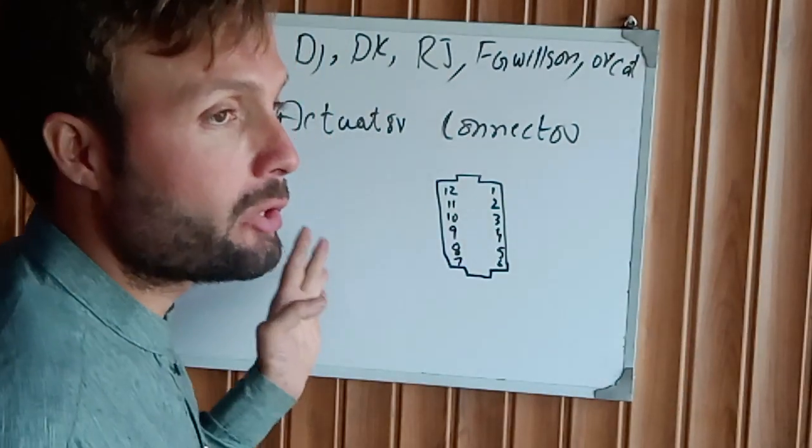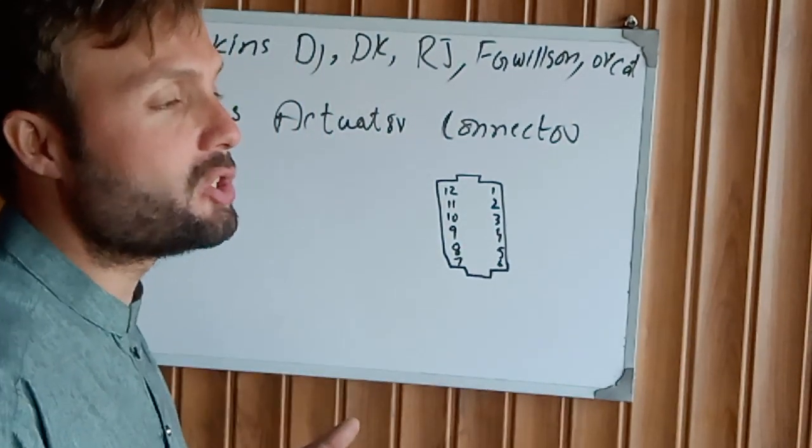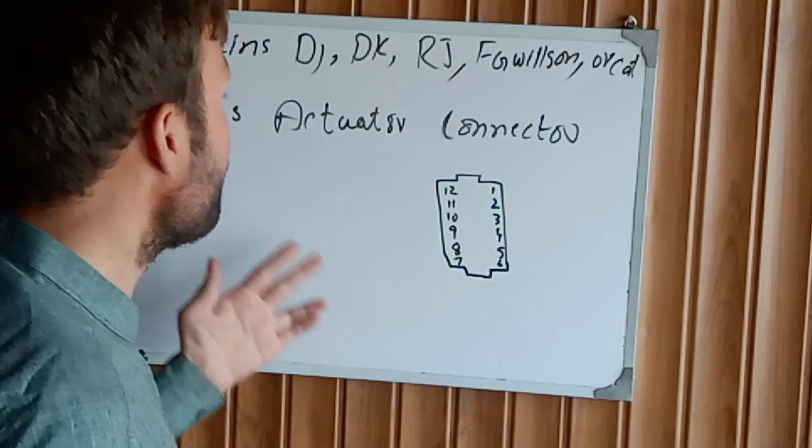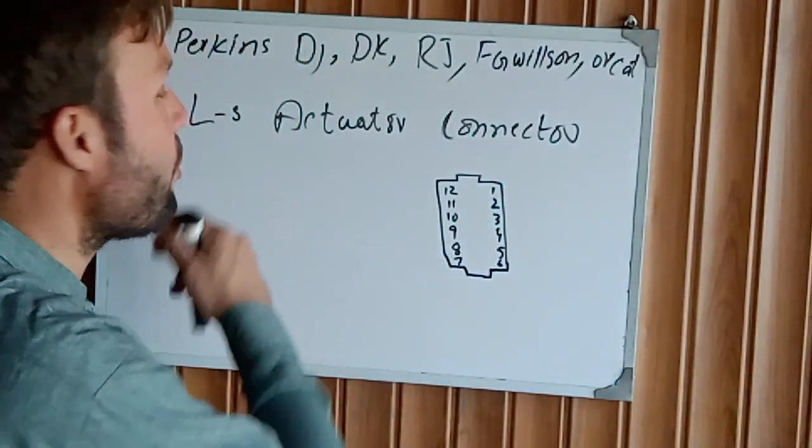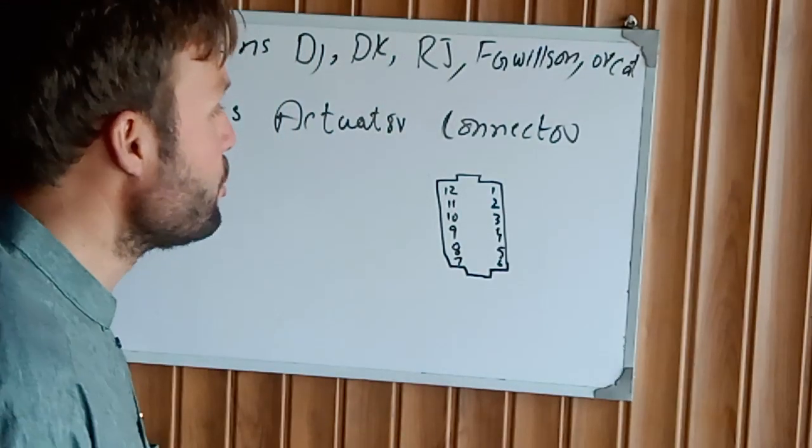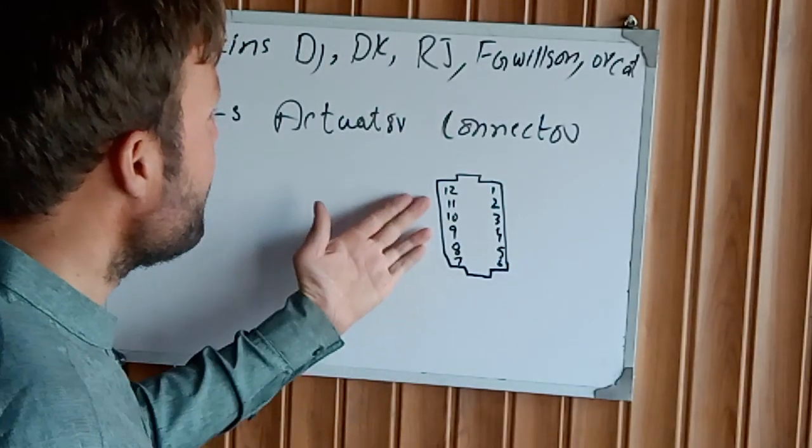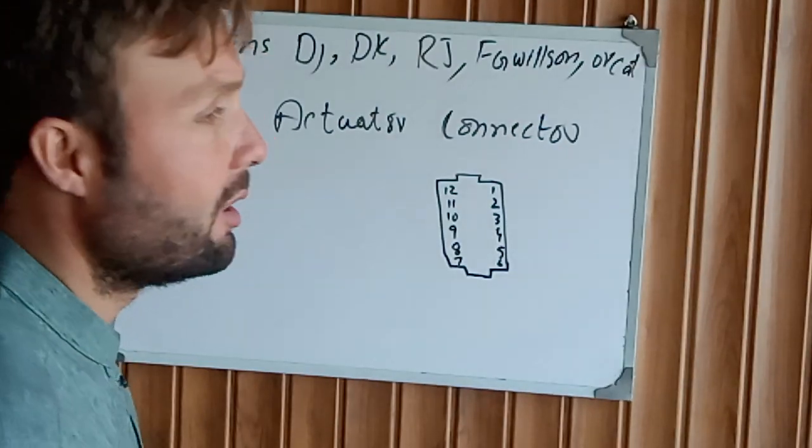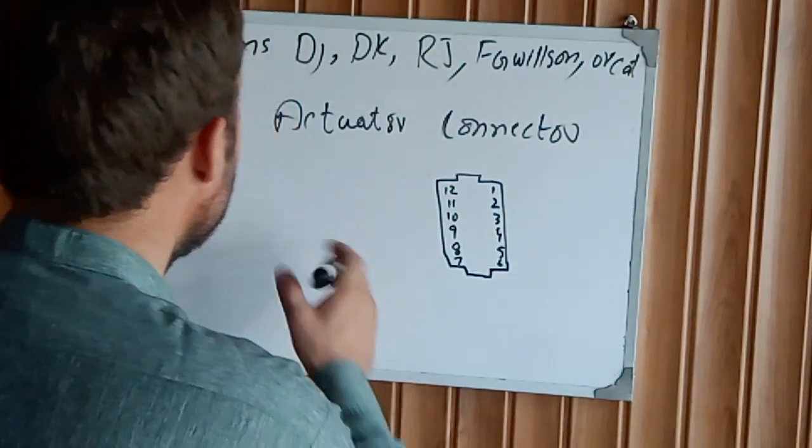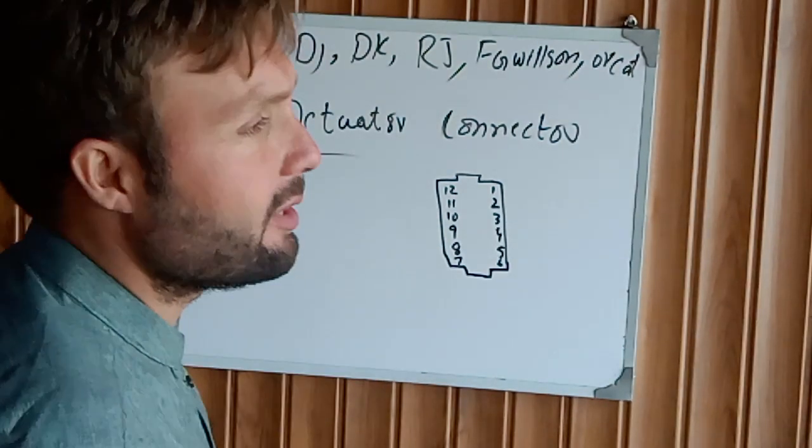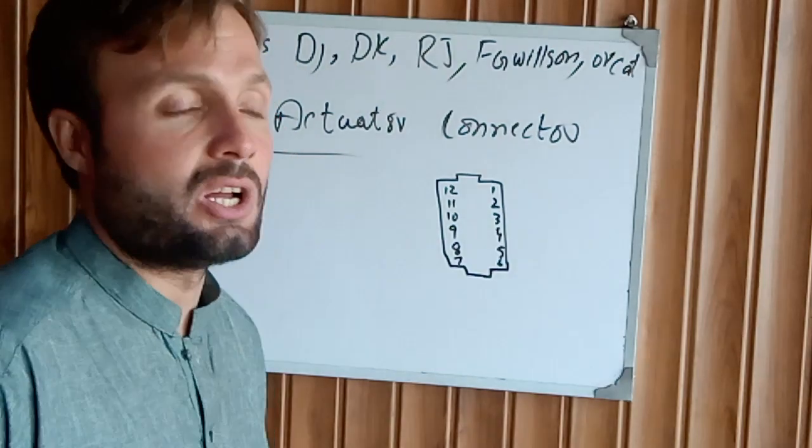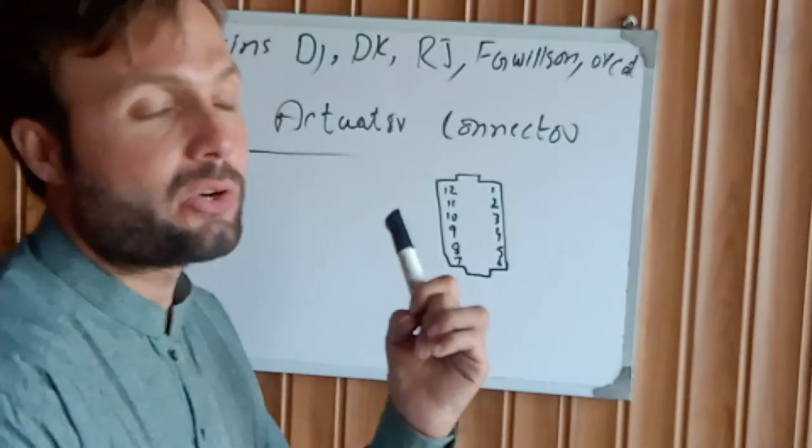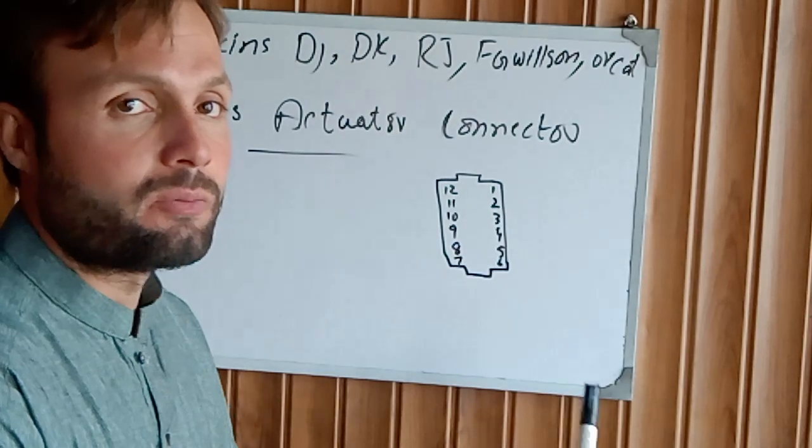A lot of times this causes problems on Perkins DJ, DK, RJ engines for 100-110 kVA generators - engine cranks but does not start. How to know, install, fix, and test if this actuator is working properly? If you have this problem, that means your engine cranks but does not start. First of all, check the fuel supply.